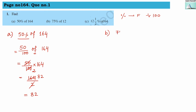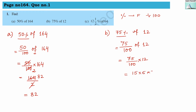Numerical B: 75% of 12. Let us convert this into fraction: 75 divided by 100 into 12. Simplifying: 15 fives are 75, and 3 fours are 12. In the denominator we get 20 fives. We can cancel 5, 4, and 20. We get 3 into 3, which equals 9. So 75% of 12 is 9.